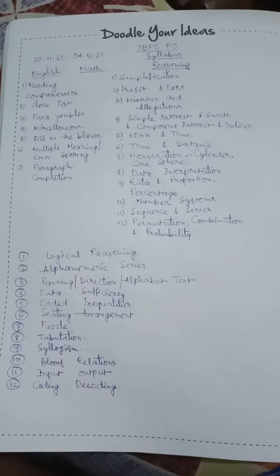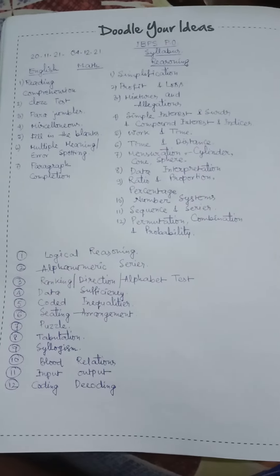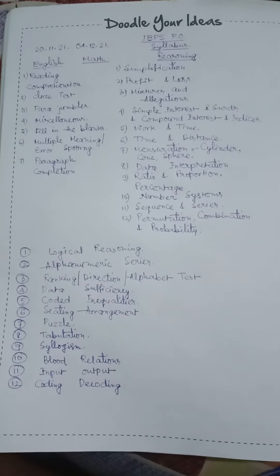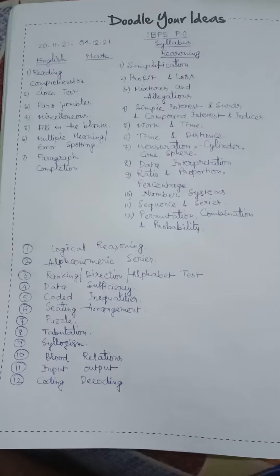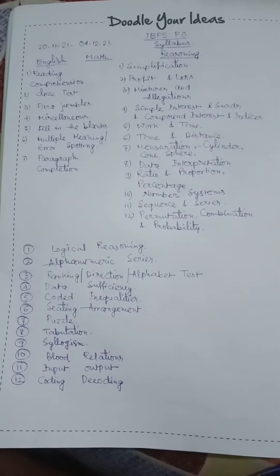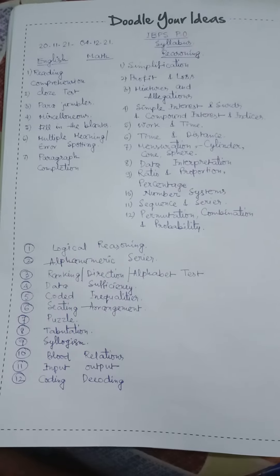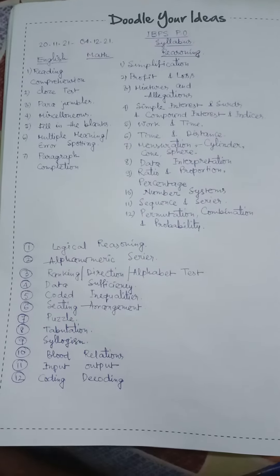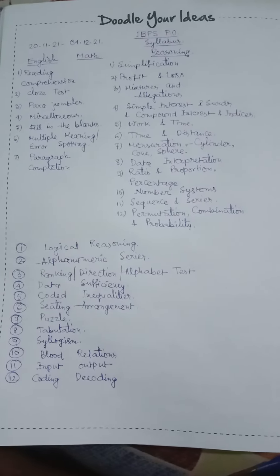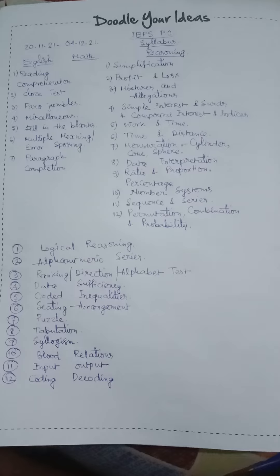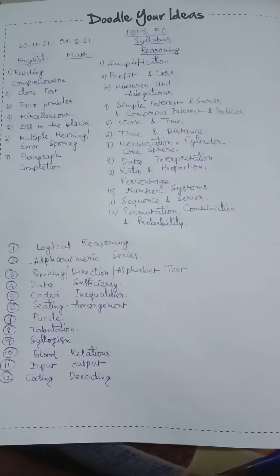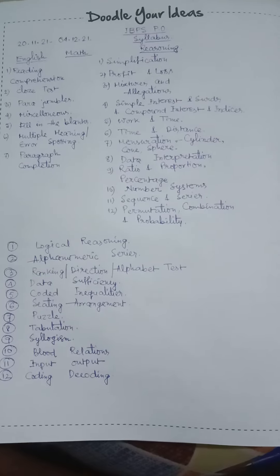The syllabus of IBPS PO English section includes reading comprehension, close test, para jumbles, miscellaneous, fill in the blanks, multiple meaning, error spotting, paragraph completion. The reasoning and quantitative sections cover simplification, profit and loss, mixture and allegations, simple interest, compound interest, and indices.